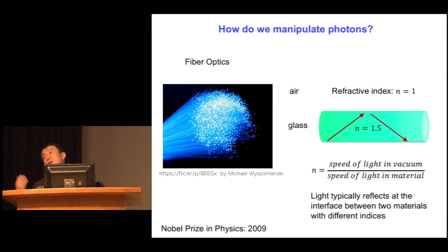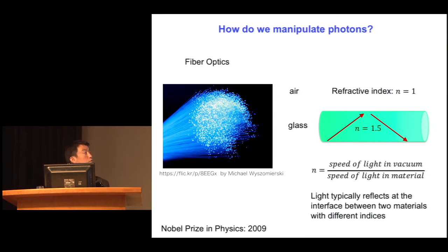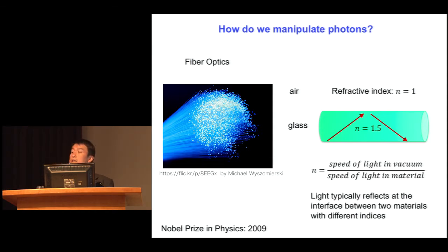A refractive index of 1.5 means the speed is approximately 50% lower compared with the speed of light in vacuum. When light hits the interface between two different materials with different refractive indices — for example, between glass and air — it tends to reflect. As a result, a glass tube like this can be used to guide light over long distances. This is the fundamental aspect of fiber optics, which resulted in yet another Nobel Prize in physics in 2009.